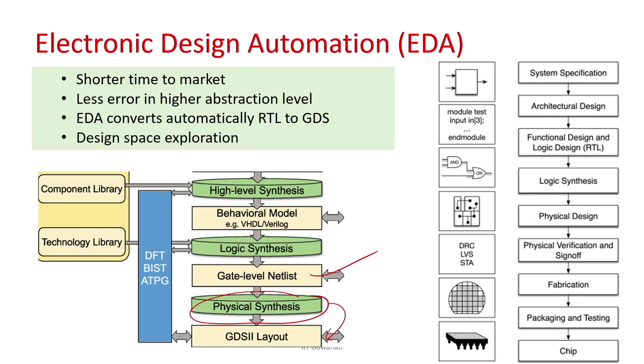At the register transfer level, we express our circuit in terms of the transfer of values between registers in every clock — describing how the registers of your design get updated each clock. For example, you write: always at the positive edge of clock, A = B + C. This means every clock, whatever the values of registers B and C are added and stored in A. Now if we think of this adder as a carry lookahead adder, we can automatically convert the RTL design into a gate-level design where the plus is represented as a carry lookahead adder. This process is called logic synthesis — where RTL is automatically converted into gate-level.